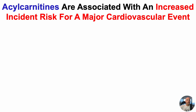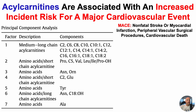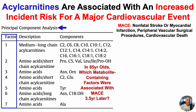Acylcarnitines are associated with an increased incident risk for having a major cardiovascular event. Major adverse cardiovascular events, or MACE, were defined as having a non-fatal stroke or myocardial infarction, peripheral vascular surgical procedures, and cardiovascular death. In this study, they used principal component analysis on 49 metabolites, statistically grouping them into seven principal component containing factors. Then in a study of 85-year-olds, which metabolite-containing factors were associated with having a major adverse cardiovascular event 3.5 years later?